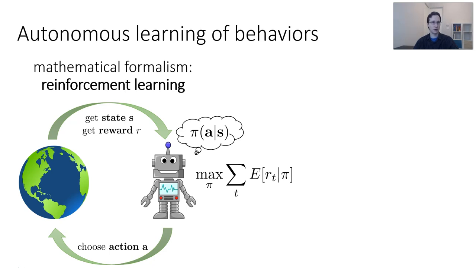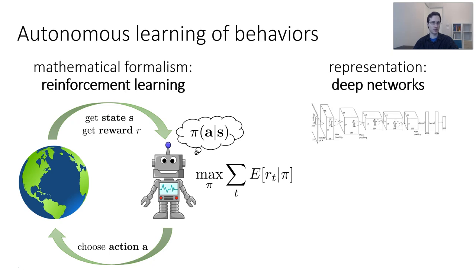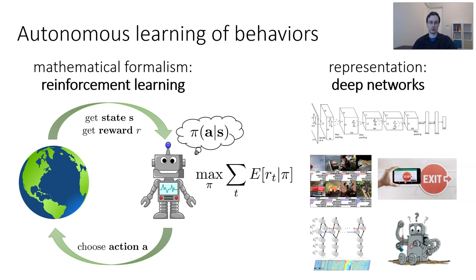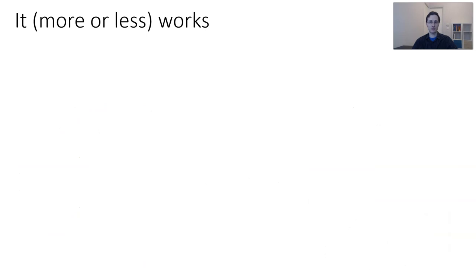Besides the mathematical formalism, we also need to choose a representation, and a very powerful class of representations is provided by deep neural networks. We know that deep neural networks have worked very well in a range of perceptual tasks, like computer vision, translating text, speech recognition, and perhaps they can work very well for learning behaviors. The basic formalism of reinforcement learning, when combined with deep learning, does work quite well in a number of settings. I'll show you some examples from my own past work to illustrate this point.